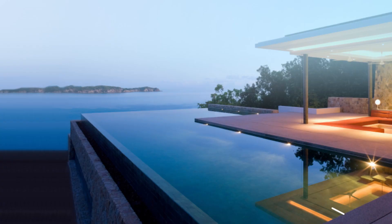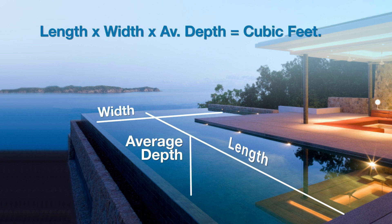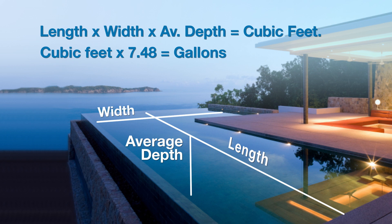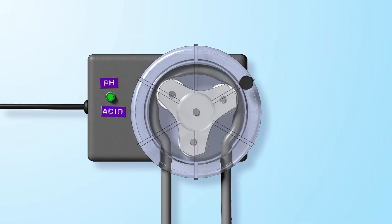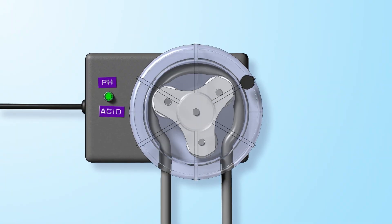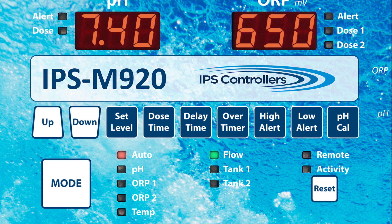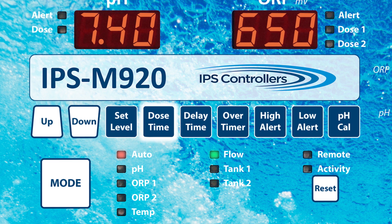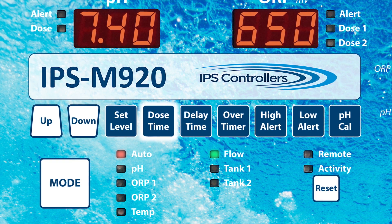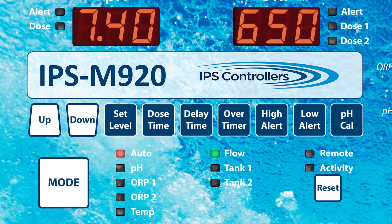Estimate the amount of water in your pool. Multiply the length by the width by the average depth, then multiply the result by 7.48 to get the number of gallons in your pool. The IPS controller controls the amount of chemical that is dosed by regulating the amount of time a chemical pump remains energized. The dose time function should be set according to the size of your pool, the size of your chemical pumps, and your anticipated bather load.